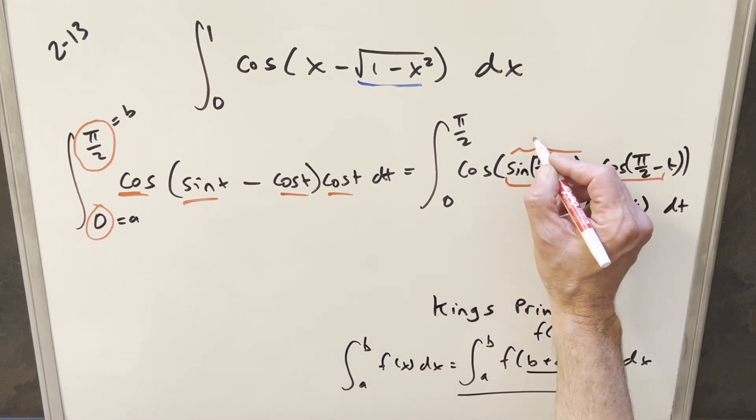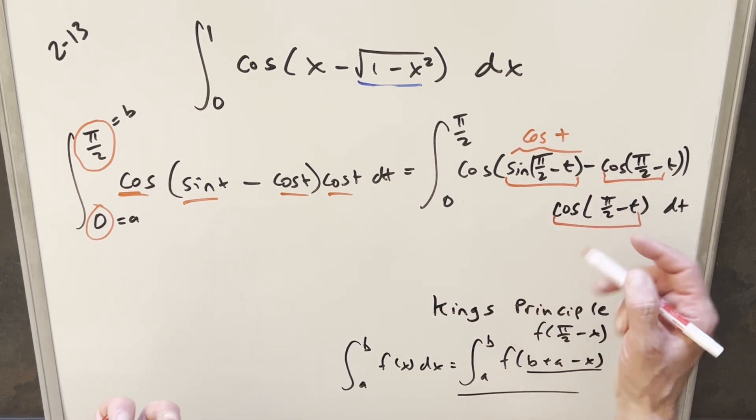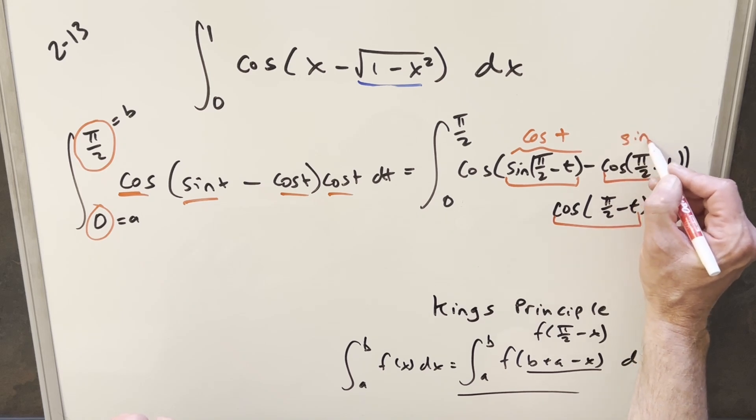So what the formula does for sine is it just converts this to cosine, so this is going to become cosine t, and then for the cosines, these will just become sines.